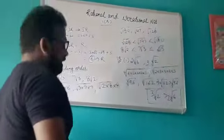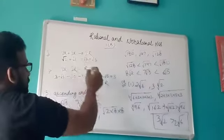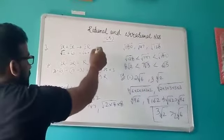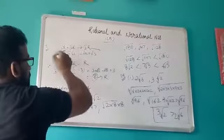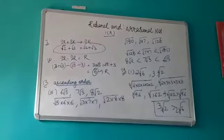In question number 7, we have to write two irrational numbers such that their sum is also an irrational number. I have taken one irrational number as √2 and another as √3. When you add them, you get √2 + √3, which is an irrational number.